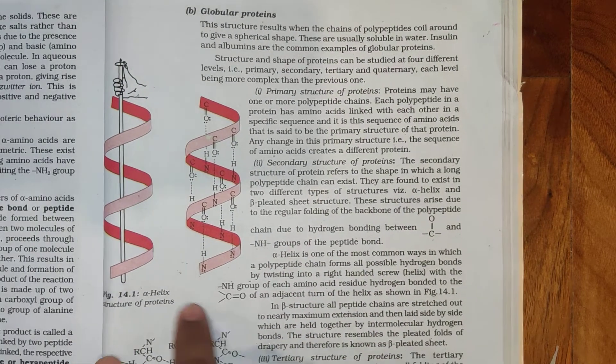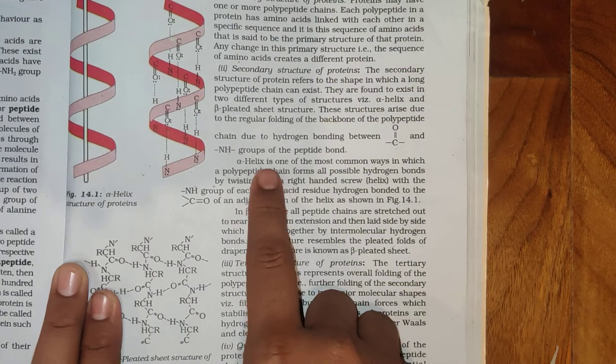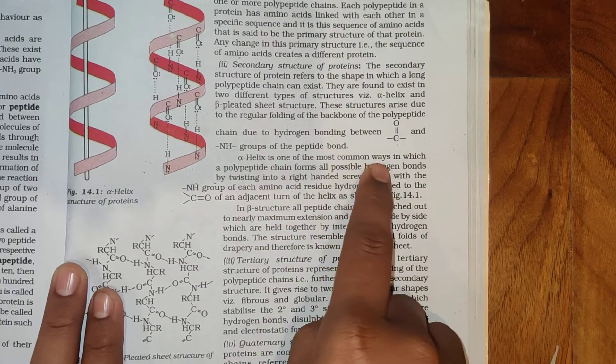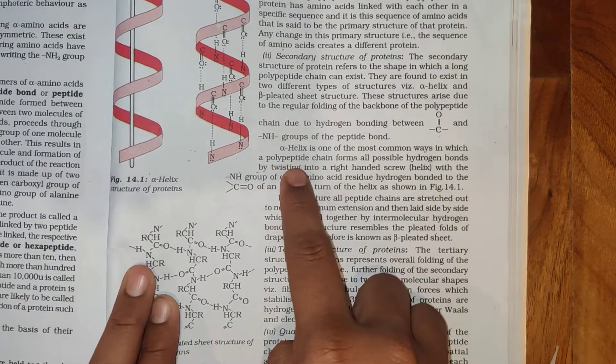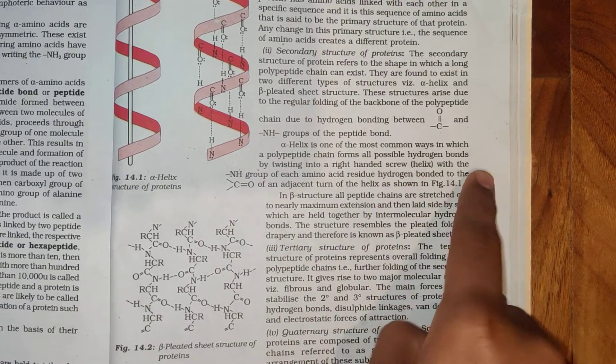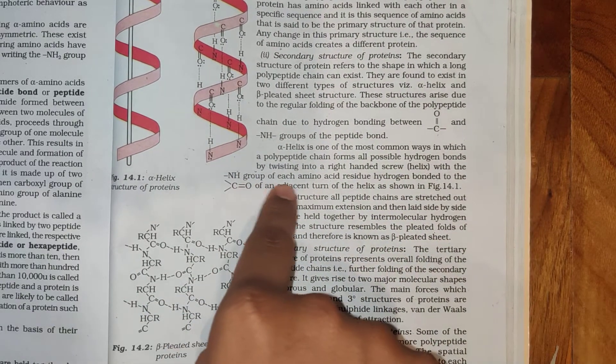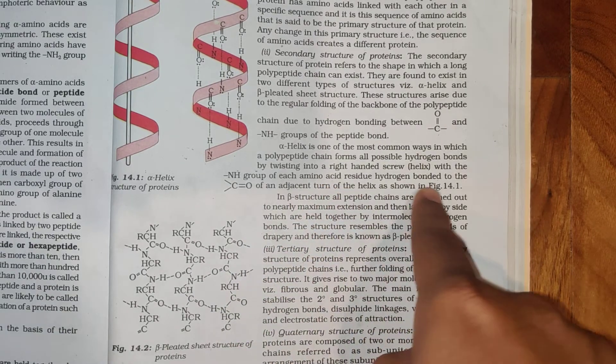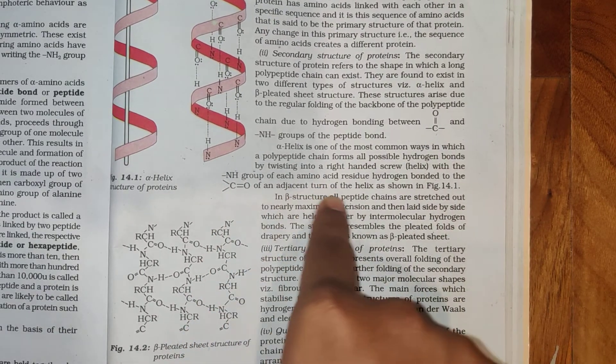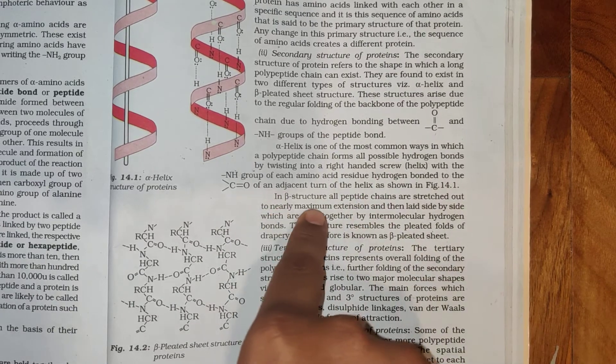Alpha helix structure of protein: Alpha helix is one of the most common ways in which a polypeptide chain forms all possible hydrogen bonds by twisting into a right-handed screw helix with the NH group of each amino acid residue hydrogen bonded to the C double bond O of an adjacent turn of the helix.